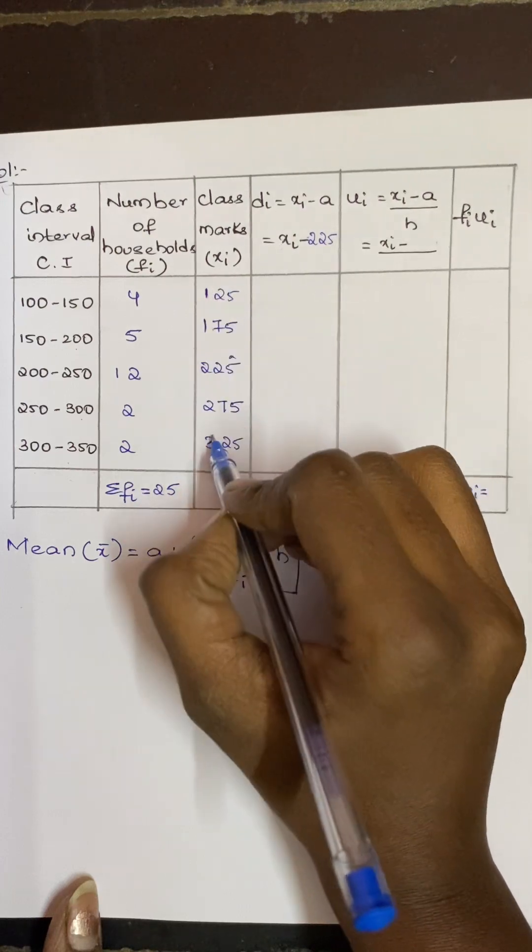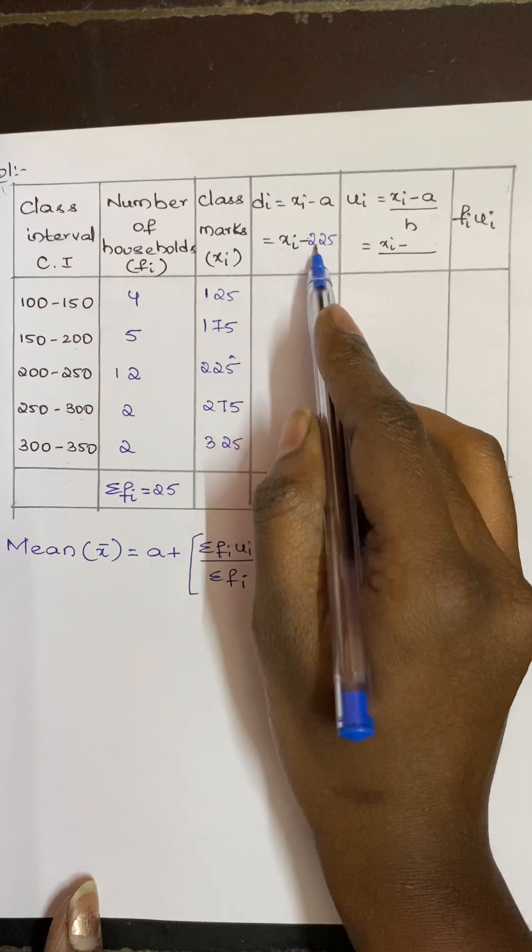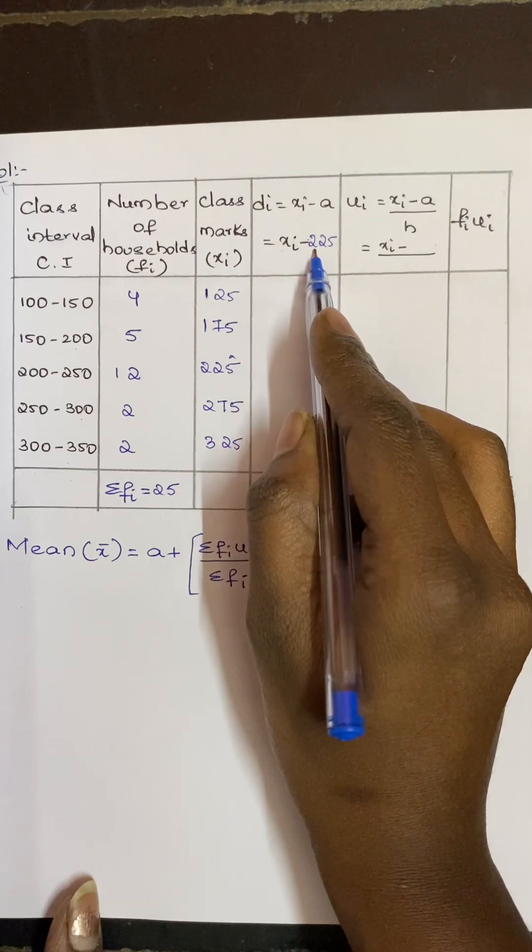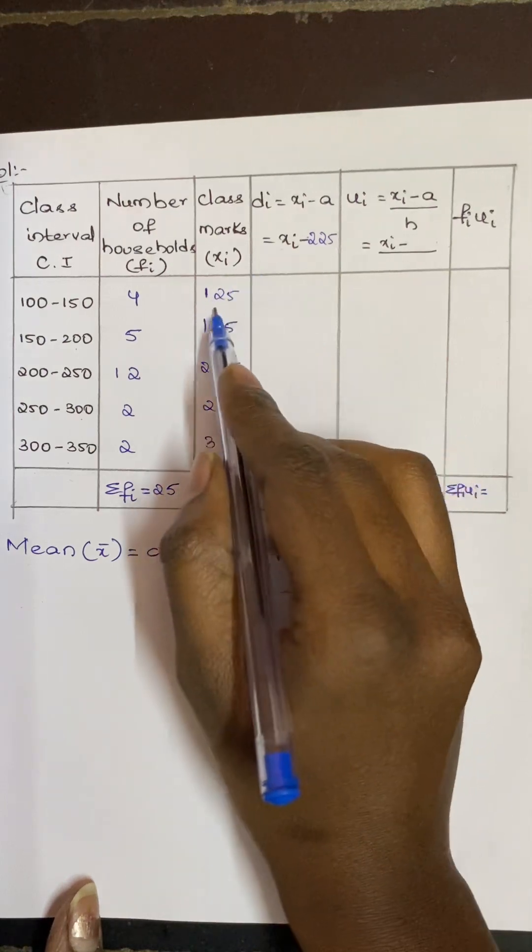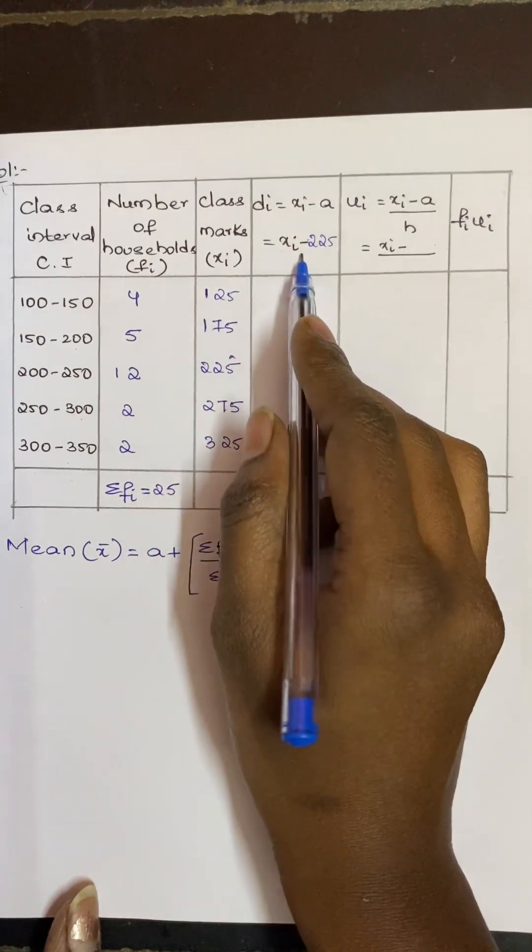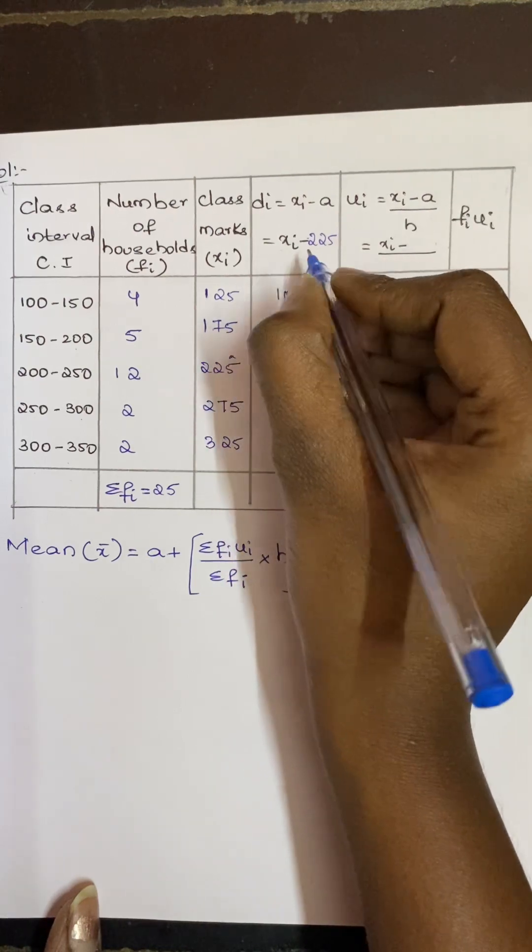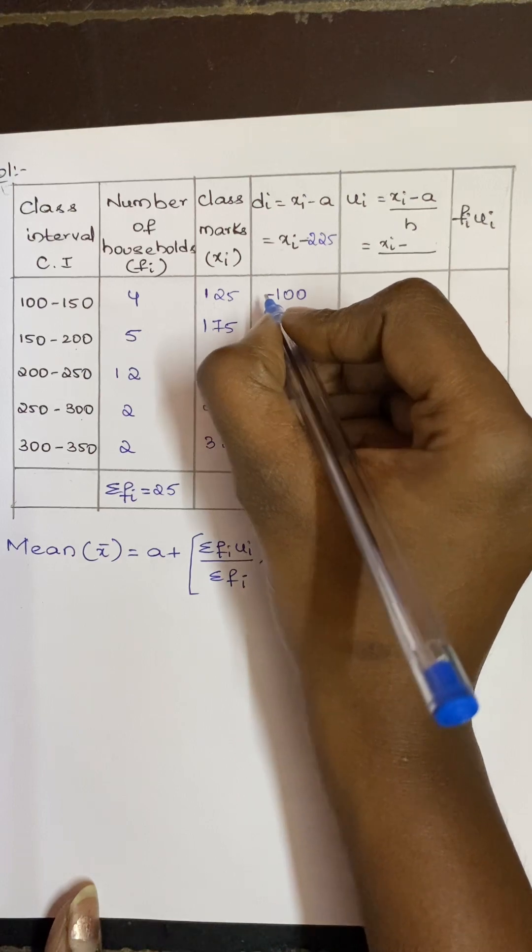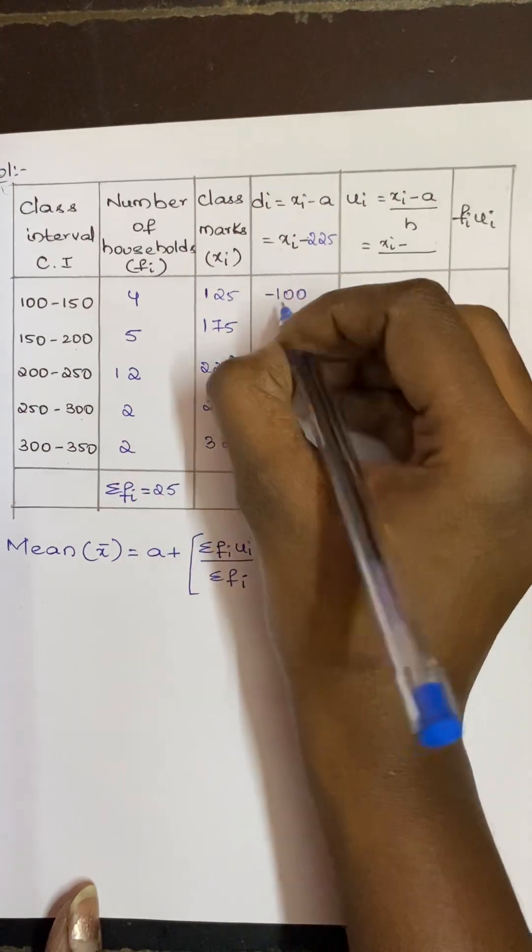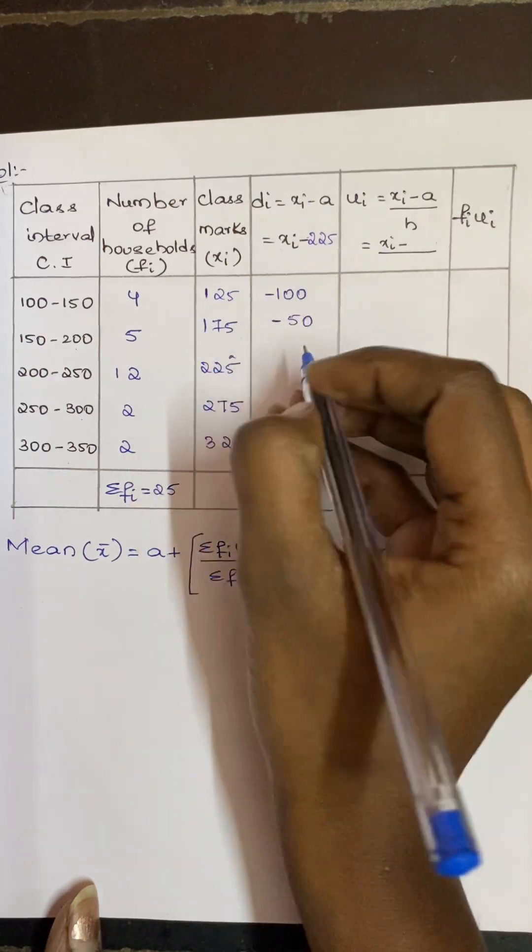So these are all the xi values. So we will substitute every time the xi value, and a value will be same. So xi 125 minus 225 becomes minus 100. Next, 175 minus 225 becomes minus 50. 225 minus 225 is 0.